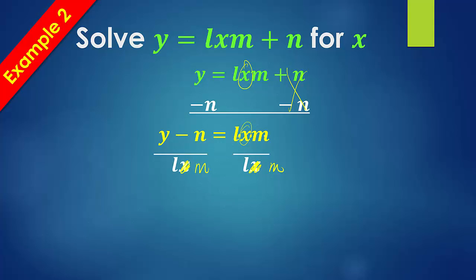And you end up with, because we're solving for x, so let me fix that. So what you should end up with is y minus n over lm, and that's equal to x.